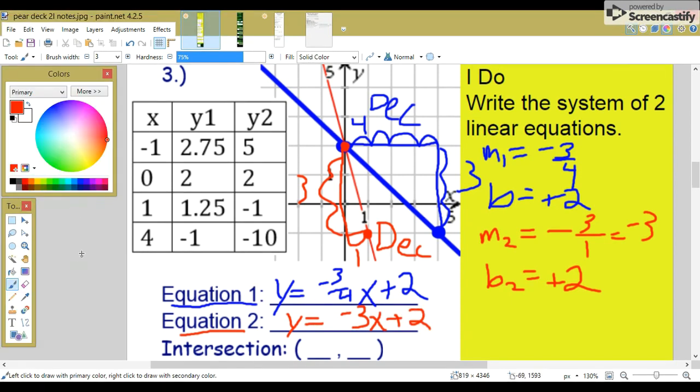The solution to this system of equations is their intersection. They both cross right here at zero comma two. So their intersection is zero comma two. The solution to this system is x equals zero and y equals two.